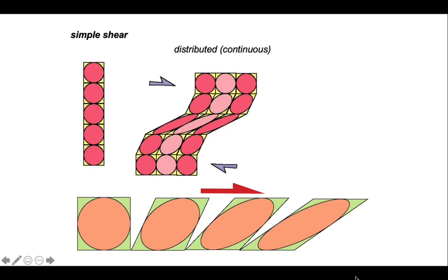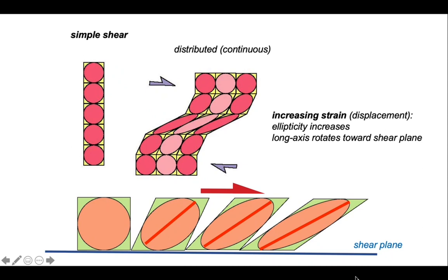Let's just consider what happens to the long axis of the ellipse. It starts off at 45 degrees and then reduces in dip. The rotation is taking that long axis down towards the orientation of a feature we call the shear plane. It's the orientation into which the shearing is occurring.